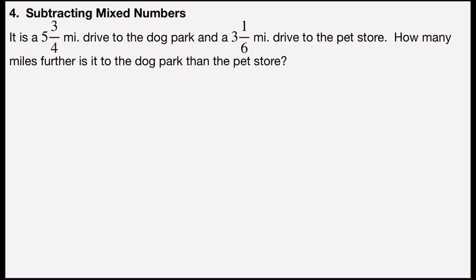It says: is a five and three-quarter mile drive to the dog park and a three and one-sixth mile drive to the pet store. How many miles further is it to the dog park than the pet store?